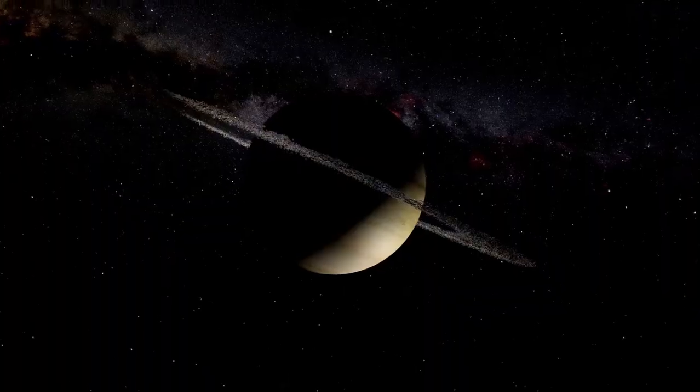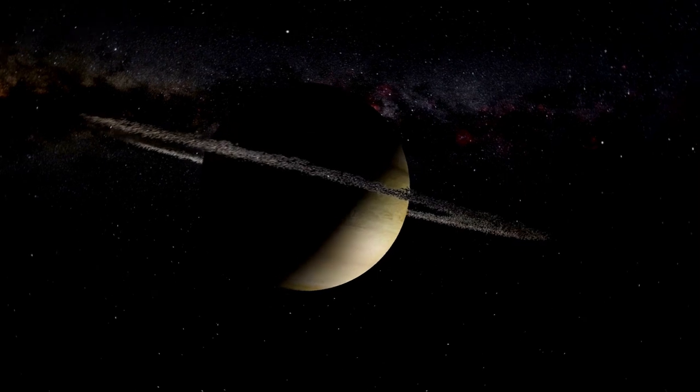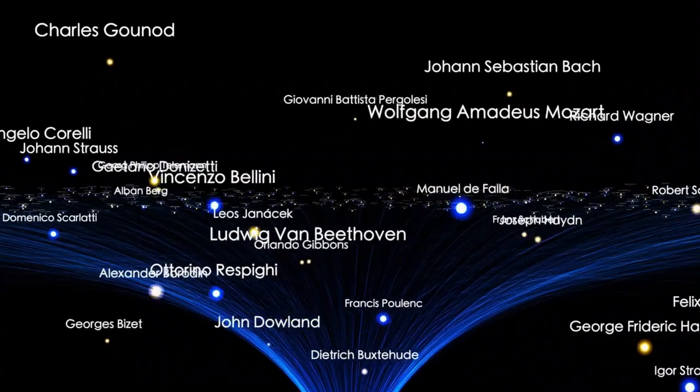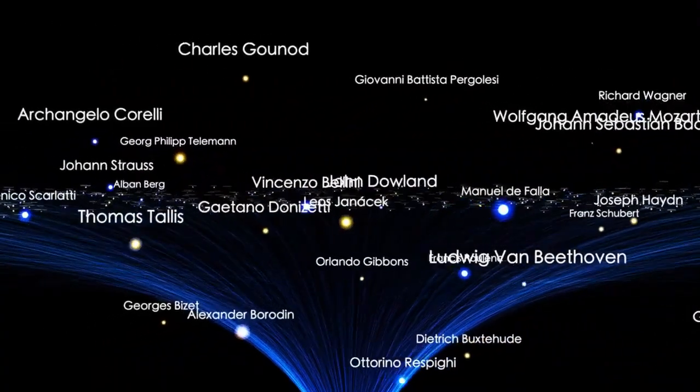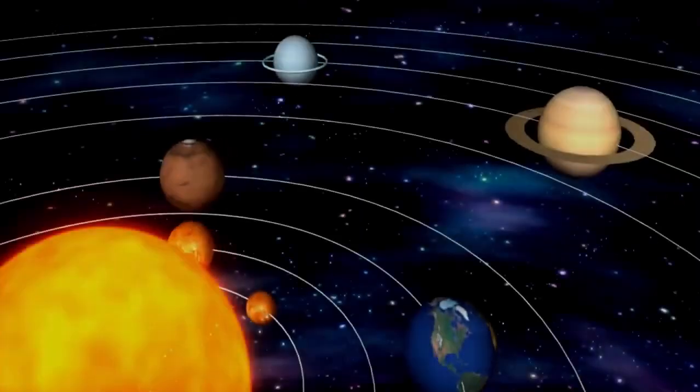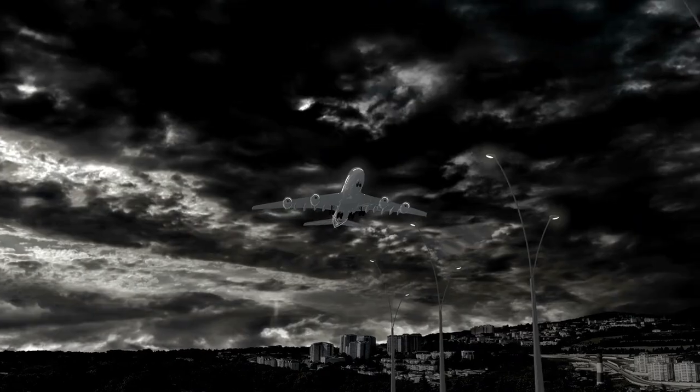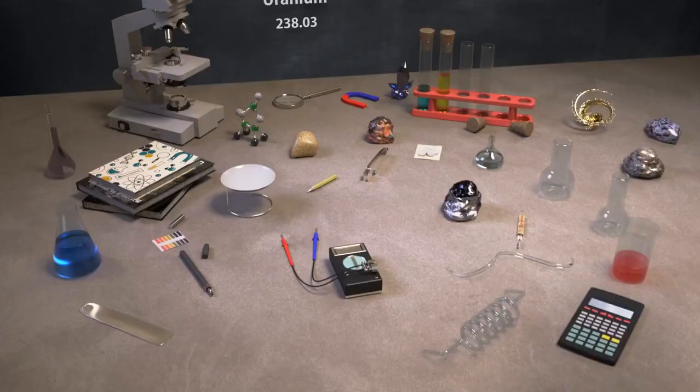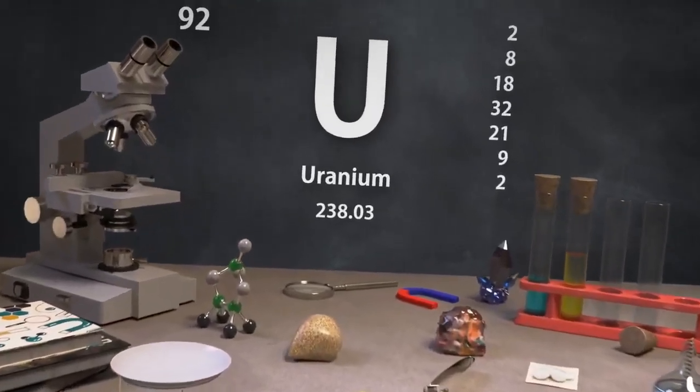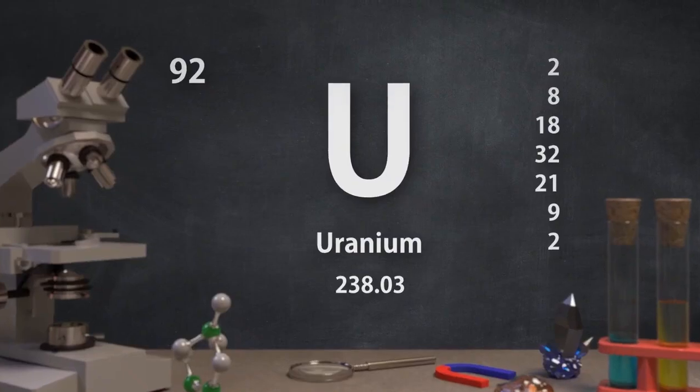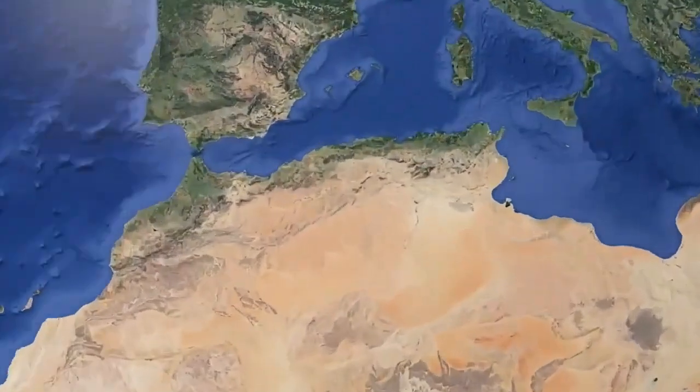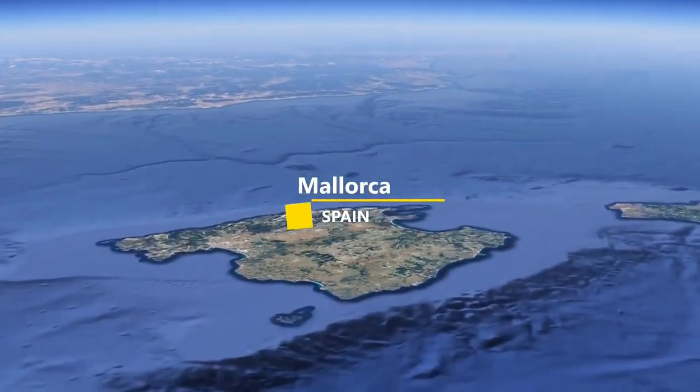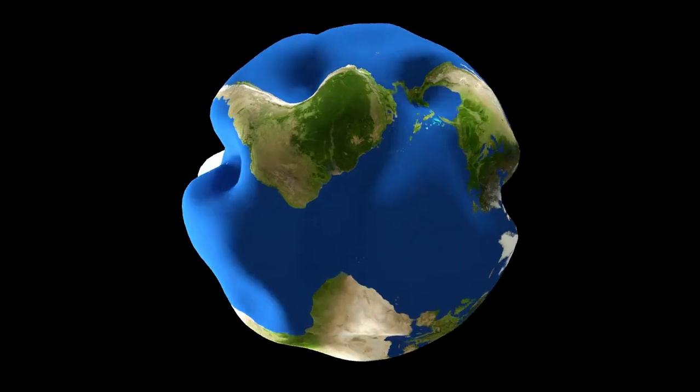Voyager 1 launched second, but traveling faster, reached Jupiter and Saturn first, while Voyager 2 went on to explore Uranus and Neptune, becoming the only spacecraft to visit these planets. Both probes carry golden records with Earth's sounds and music, intended as messages to any potential extraterrestrial life. As of January 2024, Voyager 1 is about 14.9 billion miles from Earth, making it the most distant human-made object in space. Voyager 1 entered interstellar space in August 2012, followed by Voyager 2 in November 2018.